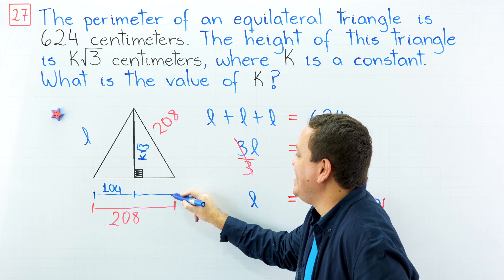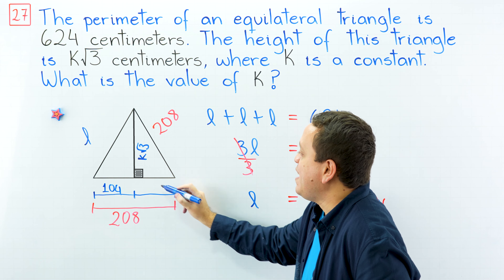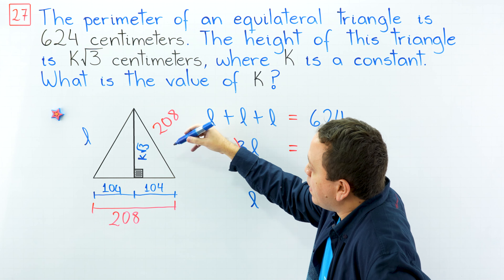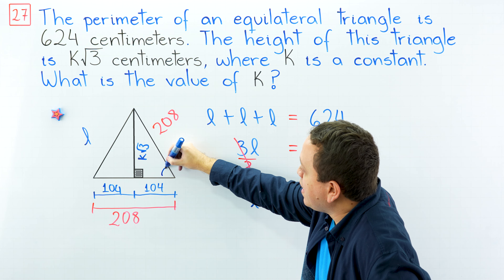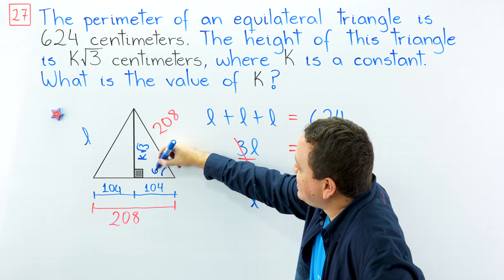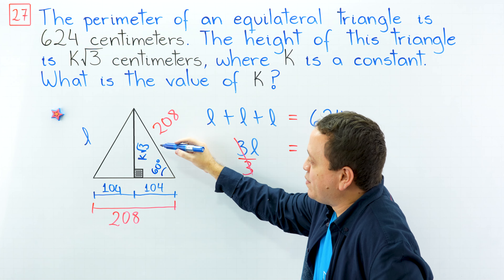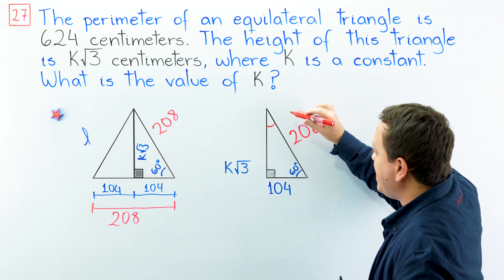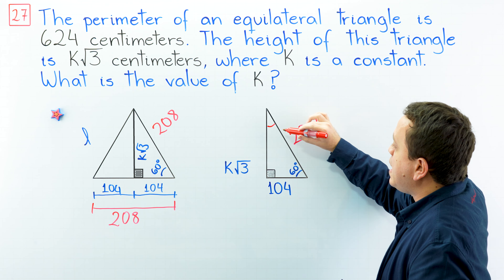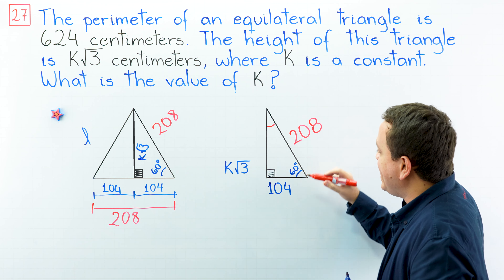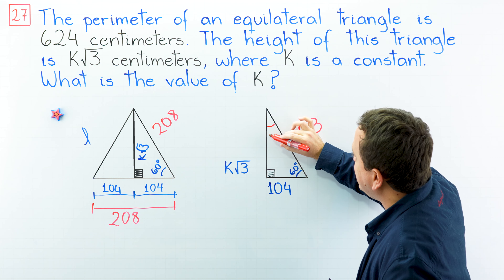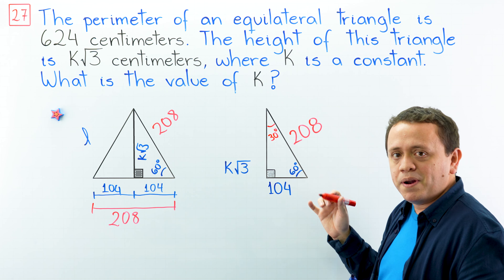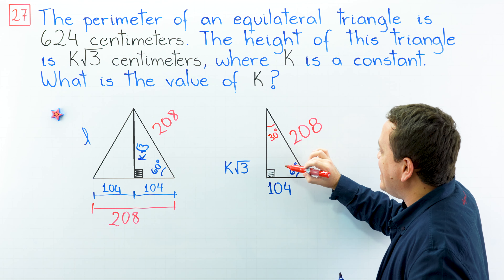The length of each half of the base is 104. Don't forget that in an equilateral triangle all interior angles have the same measure, and that is 60 degrees. Now let's focus on this smaller right triangle. Here we have 90 degrees, so this is a right triangle. The two non-right angles must sum to 90 degrees; one is 60 degrees, so we need 30 more degrees. This is our super famous 30-60-90 triangle.